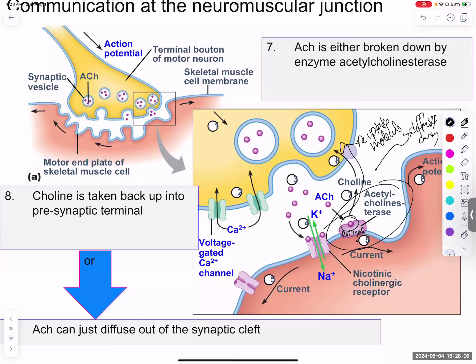That wraps up chapter 11. We will start chapter 12 after the exam on the nervous system. The neuromuscular junction content will be saved for the unit three exam, but it is introduced here in chapter 11 as a primer.